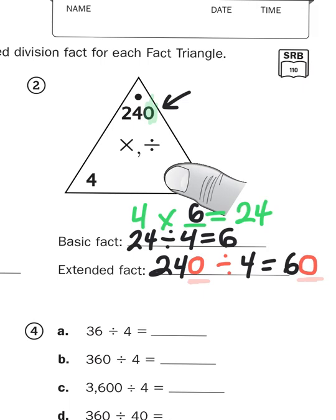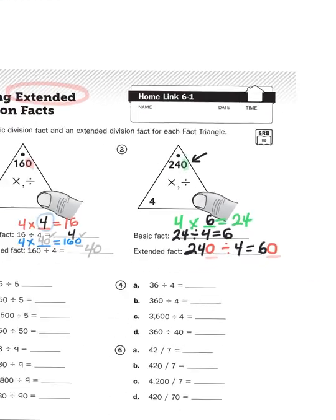So if I know that 4 times 6 gives me 24, I can then solve 24 divided into 4 groups gives me 6. If I know that 240 is divisible by 4, just like 24 is divisible by 4, I can come up with that missing quotient. Let's try one more, shall we?